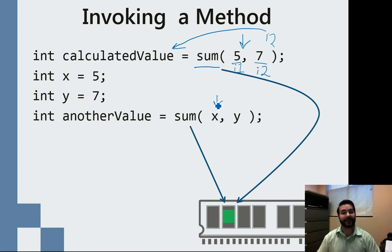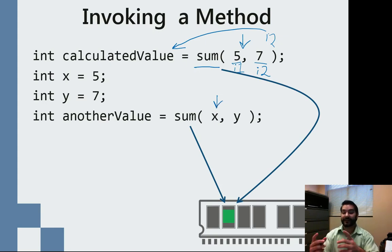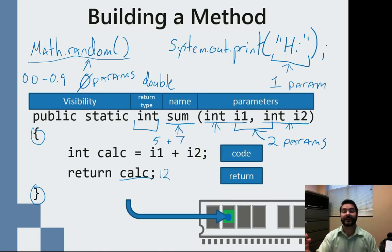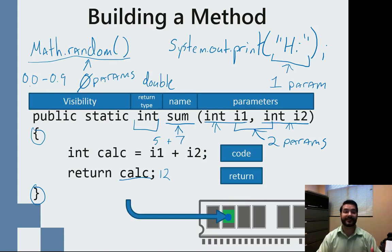This is where it's going to be evaluated. It gets evaluated first because "please excuse my dear Aunt Sally" — PEMDAS — kicks in. These parentheses: x becomes 5, y becomes 7. That, in turn, goes to my method in something known as passing by value, which we'll talk about in just a second.